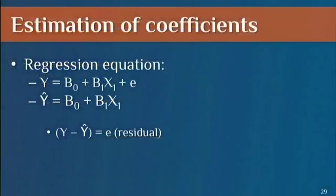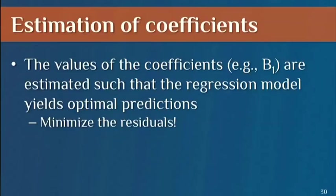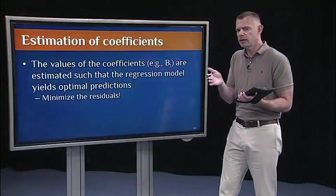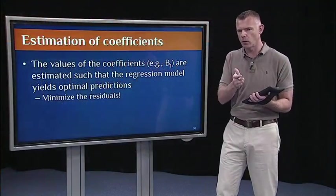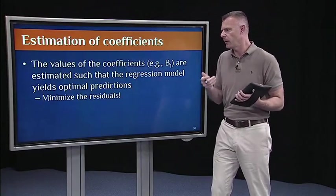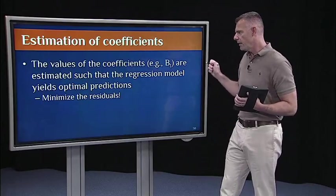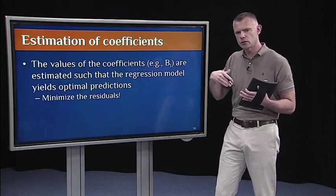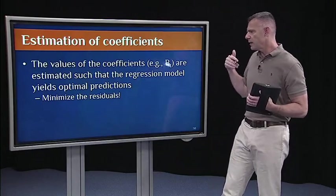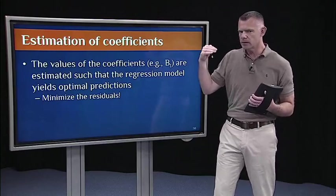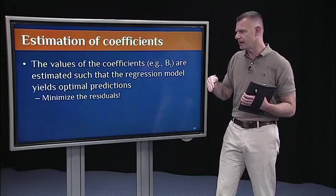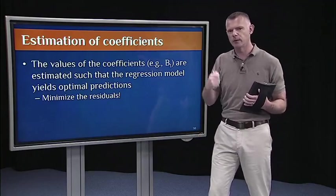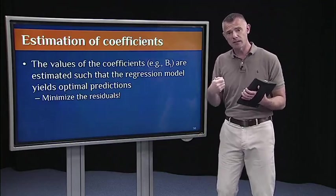So, here's the regression equation. I can rewrite it as a function of the predicted score, Y hat. And now, I just have to estimate the regression constant and the slope. The key concept here, and the math is really easy. There's actually hardly any new math. If you remember how to calculate the correlation coefficient, that's basically the math. But there's a really important new concept right here. And that is that the values of the coefficients, and this is true for multiple regression, are estimated such that the regression model yields optimal predictions. Another way to say that is minimize the residuals. That's sort of the mantra of regression. Minimize the residuals. Minimize prediction error.